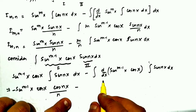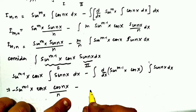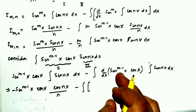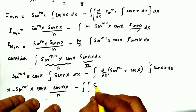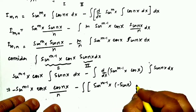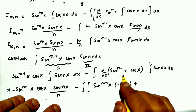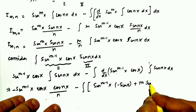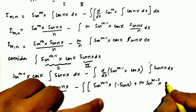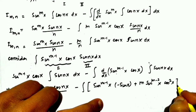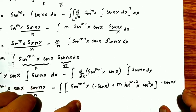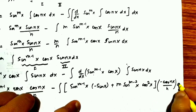Differentiating the first function sin^(m-1)(x)·cos(x) using the product rule: sin^(m-1)(x)·(−sin x) plus m·sin^(m-2)(x)·cos(x)·cos(x). So the derivative gives −sin^m(x) plus m·sin^(m-2)(x)·cos²(x). This whole expression is then multiplied by [−cos(nx)/n] dx.